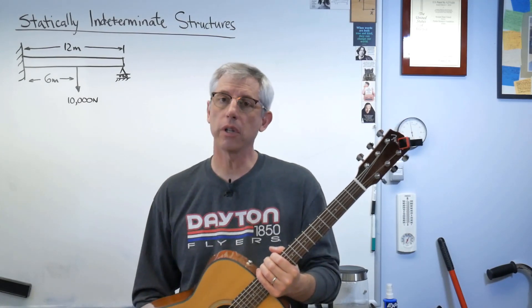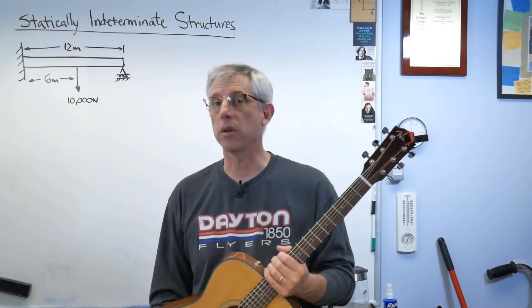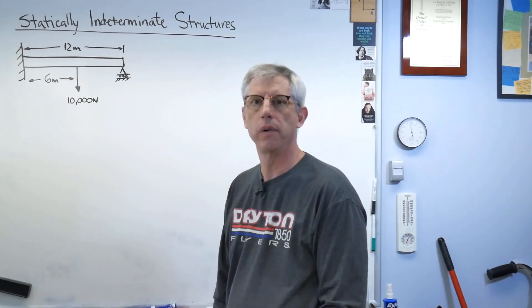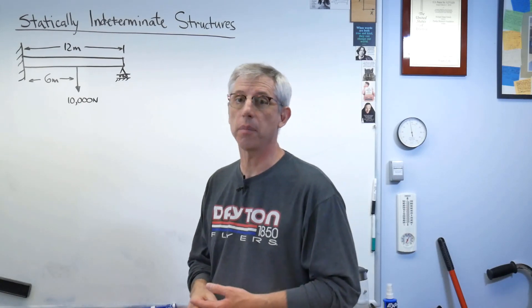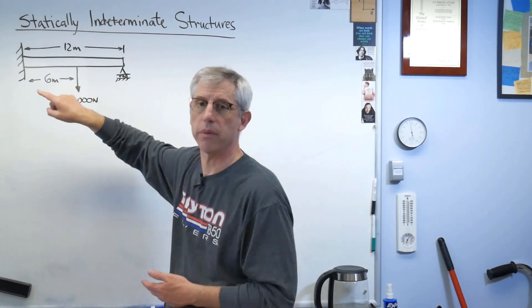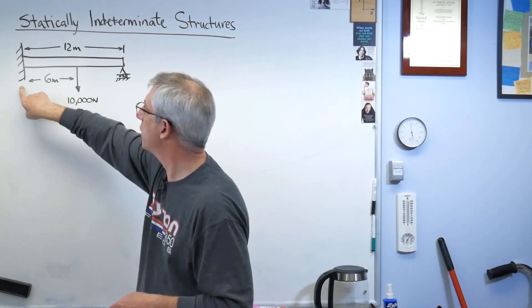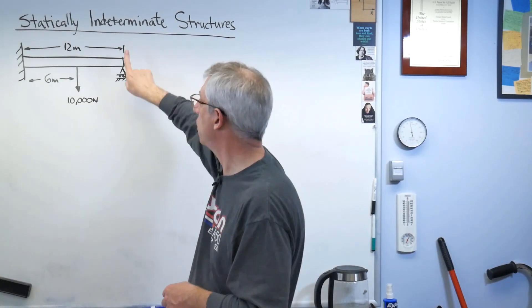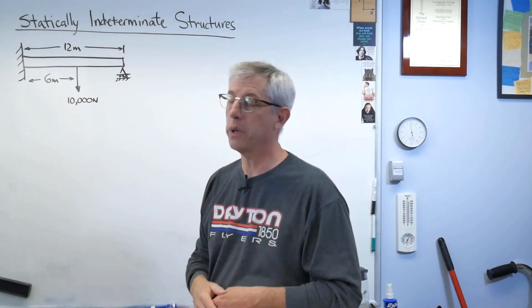So let's maybe learn a little bit more about what a statically indeterminate structure is. Let me put this back first. All right, here's a simple example of a statically indeterminate structure. This is a beam like we've seen before. It's cantilevered on the left end, and it's got a roller support, so it's got a pin on the right end that will only resist vertical forces.